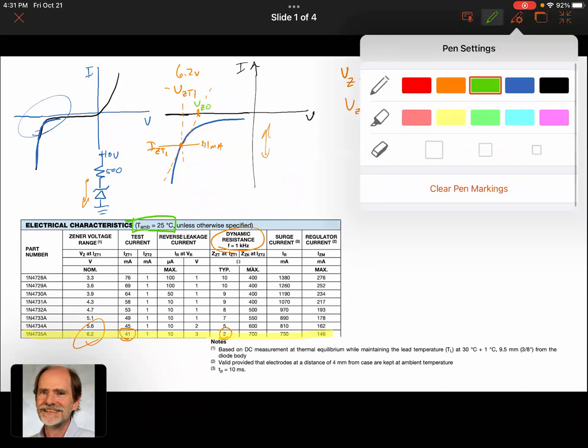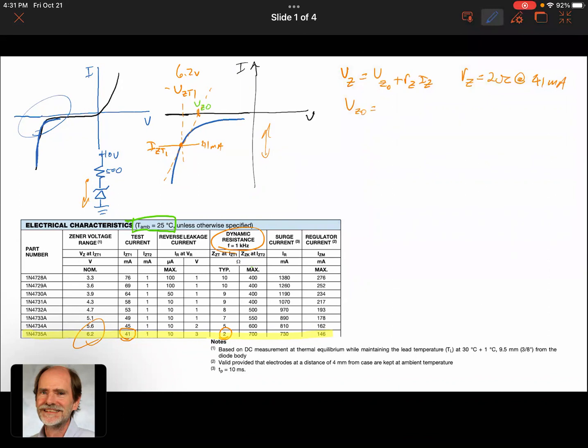So that would be 6.2 minus 2 times 0.041, and we would have a value for Vz-naught of 6.118 volts. And that could be useful. You've got a couple of points now defining this line. You've got an equation that defines the line. You've got a couple of ways of looking at it.